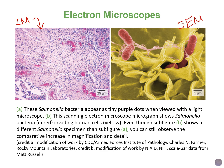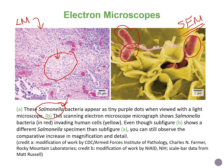Here we're looking at salmonella bacteria — you've probably heard of these; we can find them on raw chicken and eggs. Under a regular light microscope on the left, you can barely see them — they appear as tiny purple dots all over the place. But using the much more powerful scanning electron microscope, we can see these salmonella bacteria in much more detail. The colors in both images are artificial, due to staining or computerized addition of color.